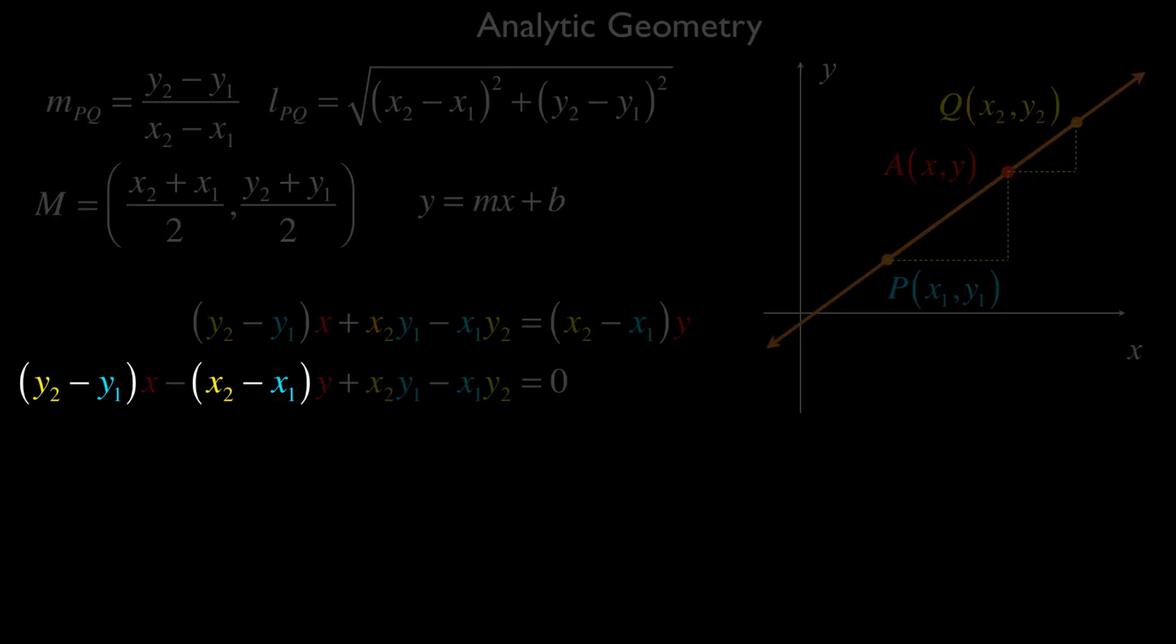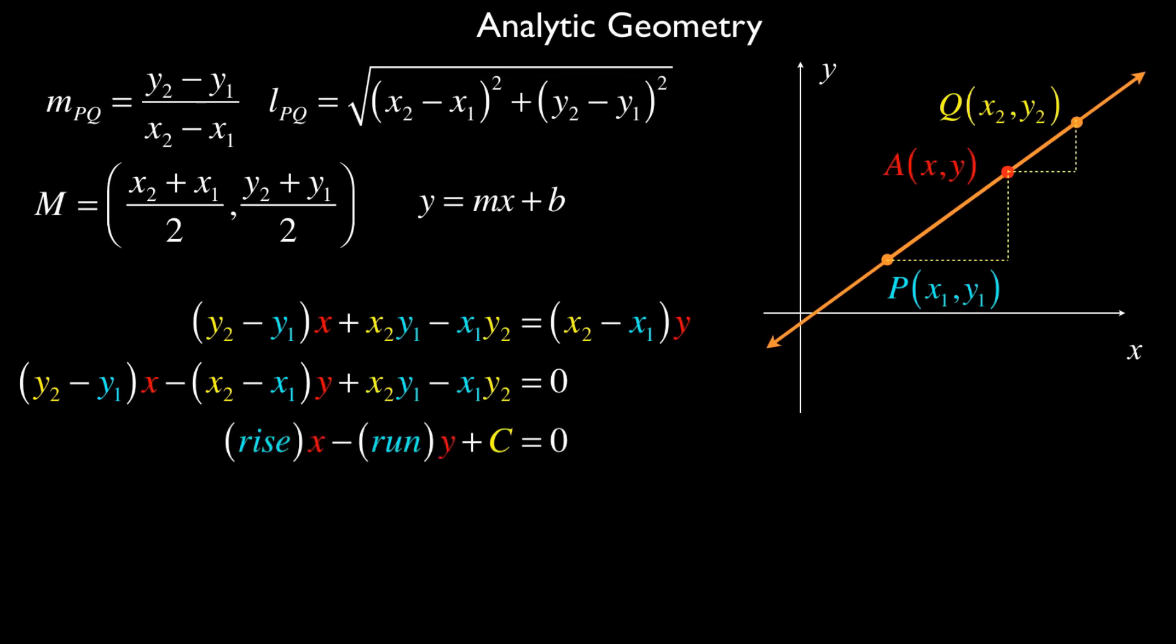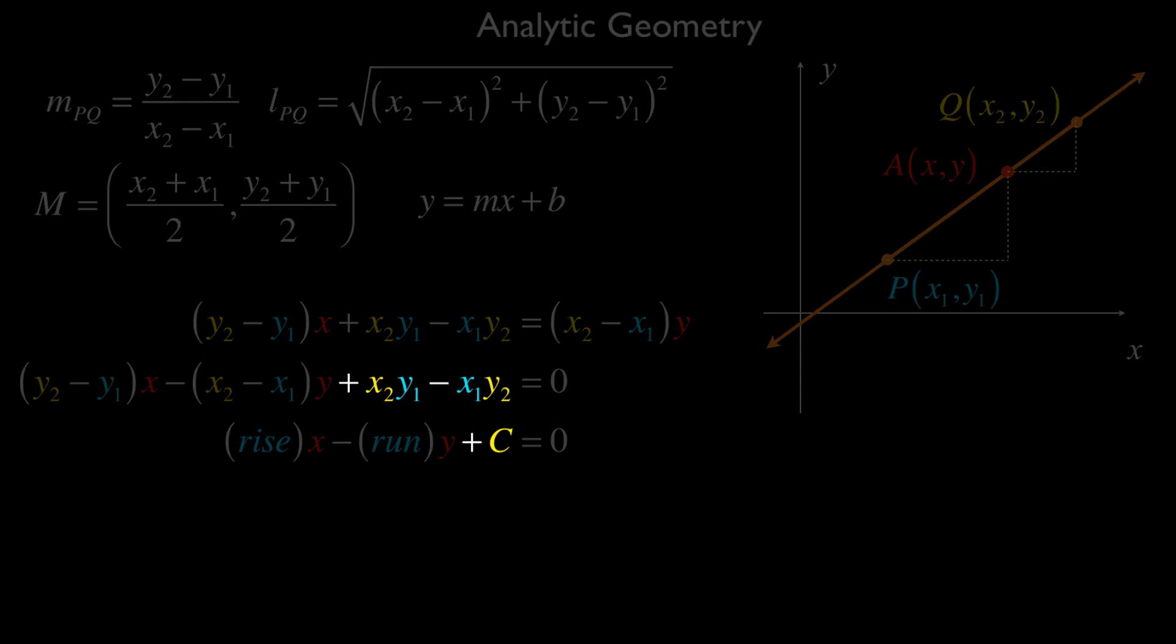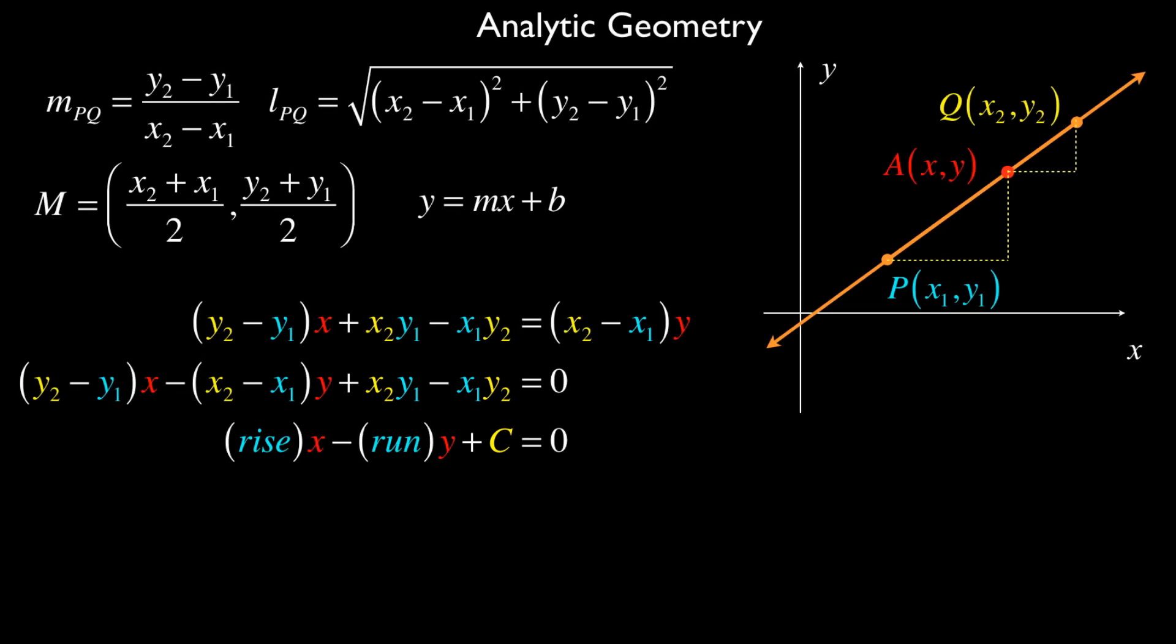I told you that y2 minus y1 and x2 minus x1 certainly look familiar. They really represent the rise and the run. So really what I have is rise x minus run y plus, and that x2y1 minus x1y2 is just going to be some constant. And so I get this simple expression where I have the rise times x minus the run times y plus c has to be zero. This is another form of the equation of this line.